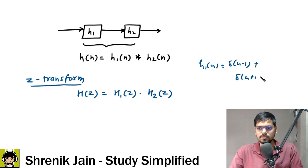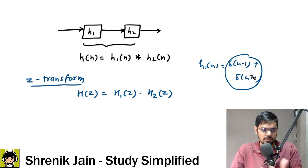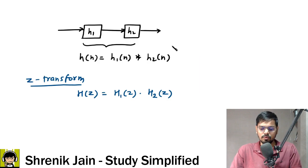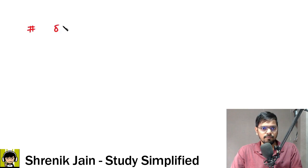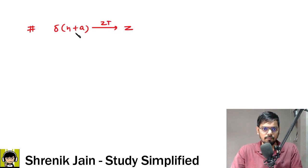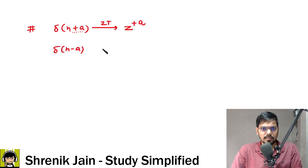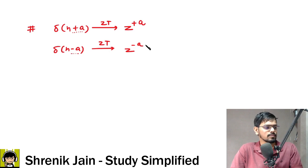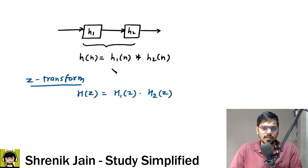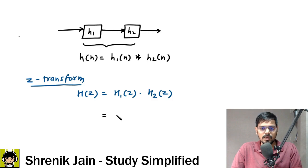h1(n) = δ(n−1) + δ(n+1). To take the Z-transform: the Z-transform of δ(n+a) is z^a. So the Z-transform of δ(n−1) is z^(−1), and of δ(n+1) is z^(+1). Therefore H1(z) = z^(−1) + z^(+1).